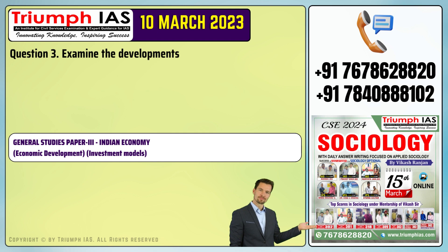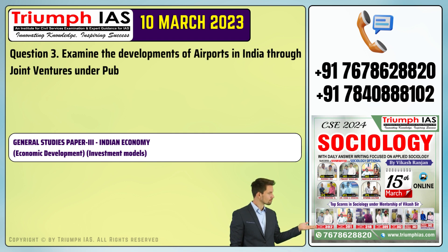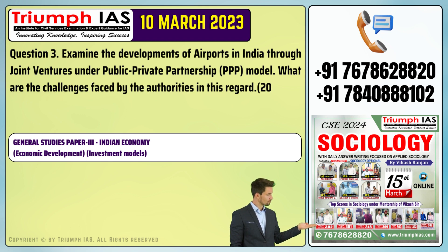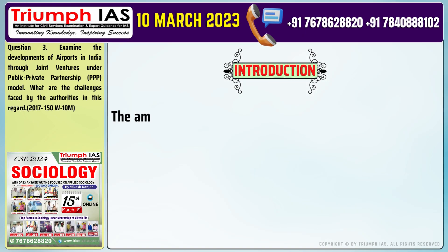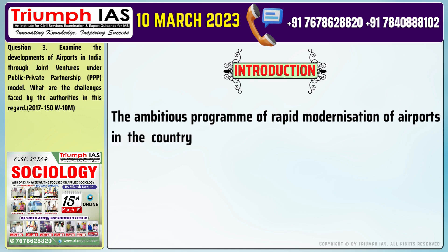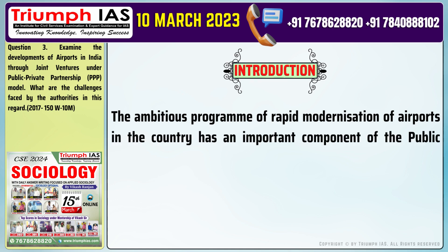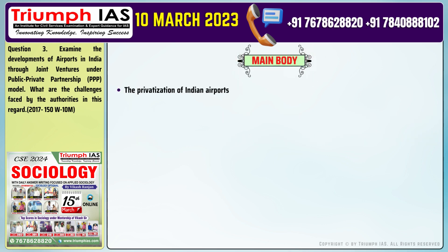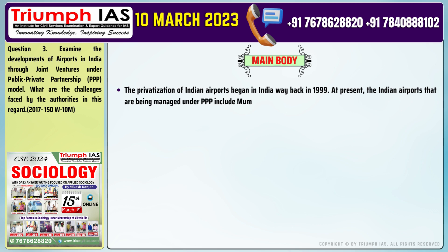Question number 3. Examine the developments of airports in India through joint ventures under the public-private partnership (PPP) model. What are the challenges faced by the authorities in this regard? The ambitious program of rapid modernization of airports in India has an important component of public-private partnership. Number 1: The privatization of Indian airports began in 1999. At present, the Indian airports being managed under PPP include Mumbai, Delhi, Hyderabad, Bangalore and Cochin airports.